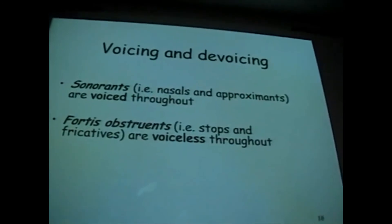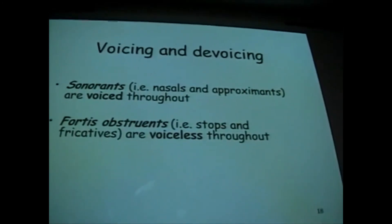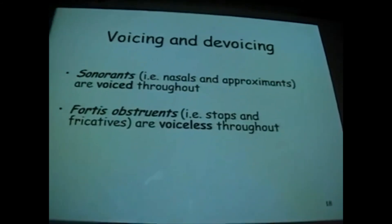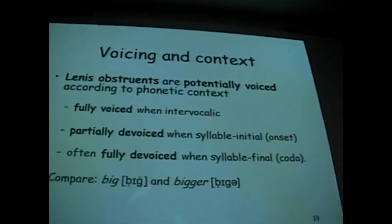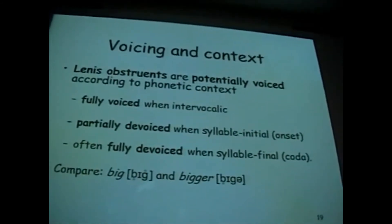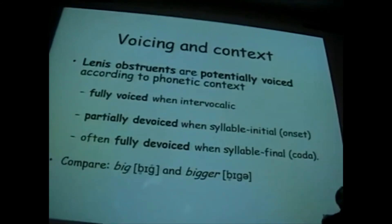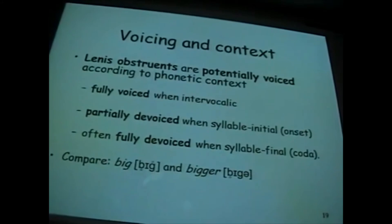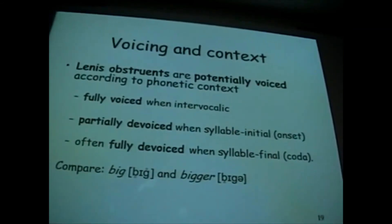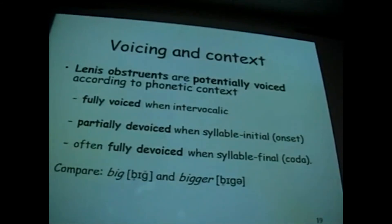Fortis obstruents, that's to say stops and fricatives, are voiceless throughout. So if I say a word like pit, it's only the vowel where you have vocal fold vibration. But when we come to the lenis obstruents, we have a more complex situation. They're only fully voiced when they're intervocalic. So for instance in a word like bigger, the g there is fully voiced. But you notice, I hope you can see it, underneath the B we have a circle, a little circle, which means the sound is devoiced. The vocal folds don't vibrate for all the sound. They're partially devoiced when they're syllable initial, as the onset of a syllable.